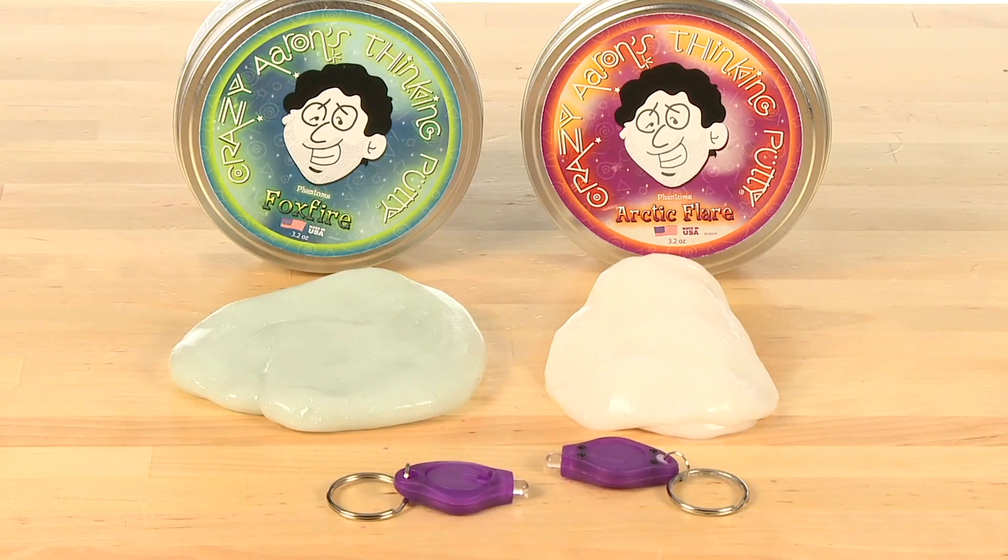But watch what happens when you turn out the lights. They glow in the dark. Foxfire turns a bluish hue while Arctic Flare turns a pinkish orange. The color shift is due to the putty's phosphorescence or ability to re-emit the light energy that it absorbs.